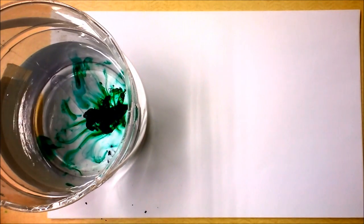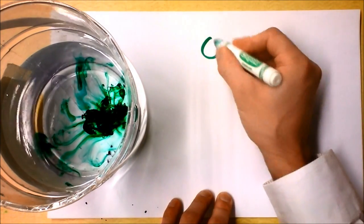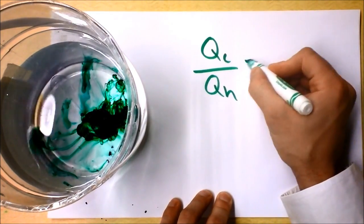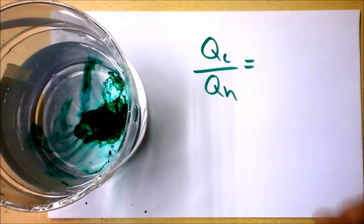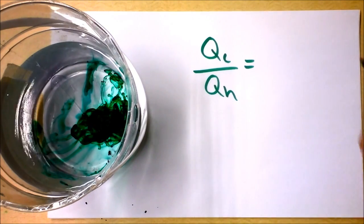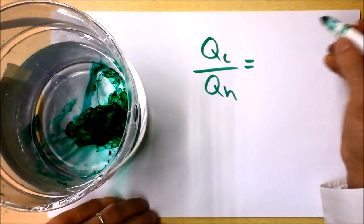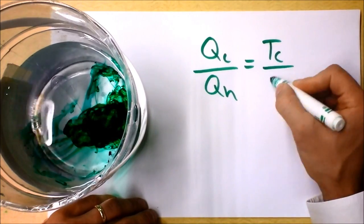Lord Kelvin said that QC over QH was equal to... oh man, now I'm going to be all green all day. Alright, Lord Kelvin said QC over QH was equal to TC over TH.